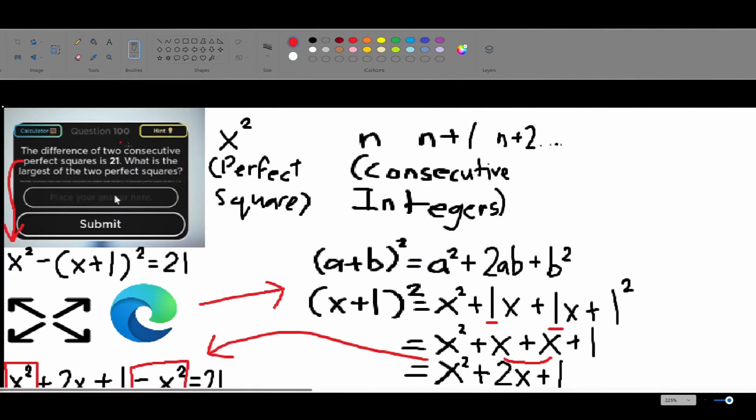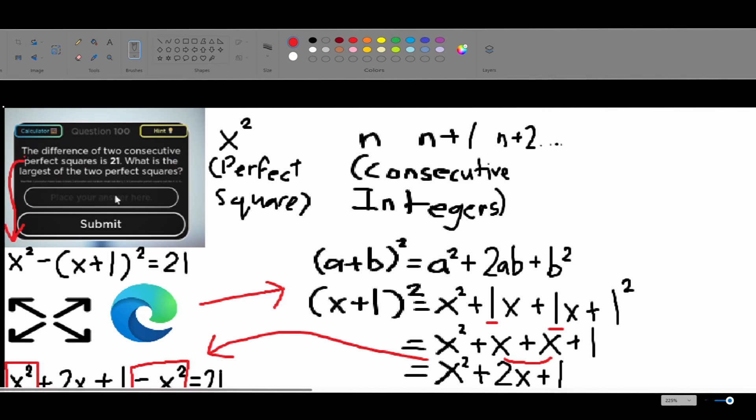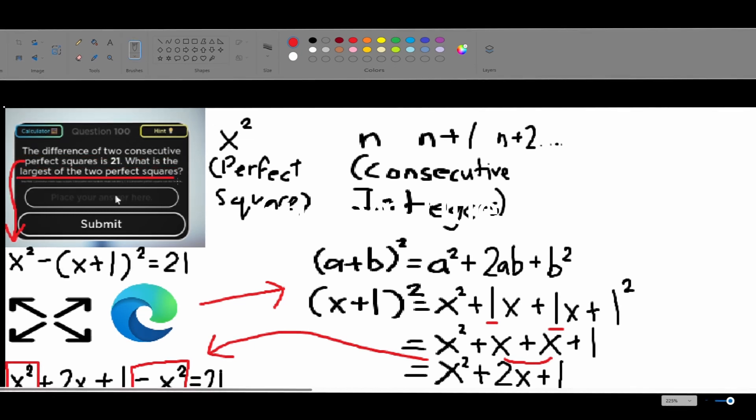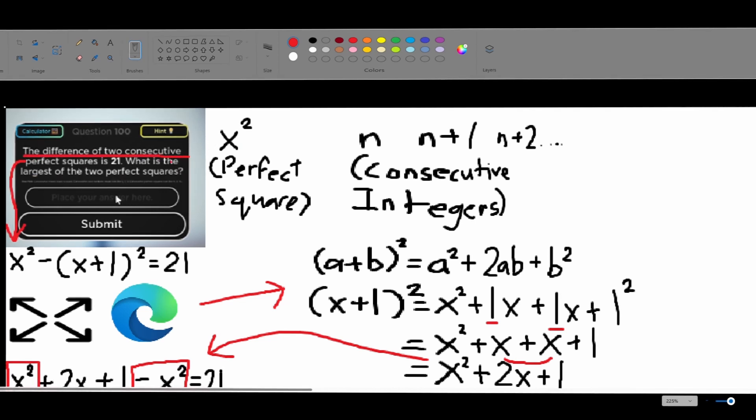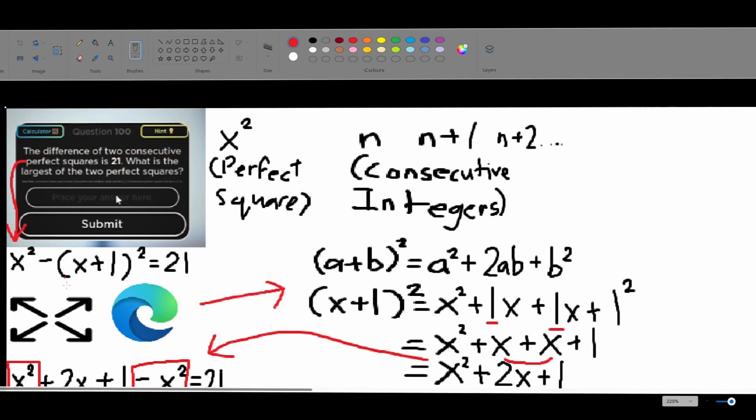Okay, hello everybody. Today we're going to be answering this word problem from Math Difficulty Tribe Abbey. The difference of two consecutive perfect squares is 21. What is the largest of the two perfect squares? So, first off, we can turn this into an equation to help look at it better and understand it better.